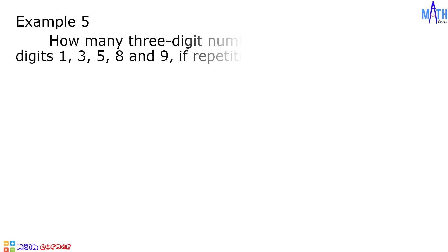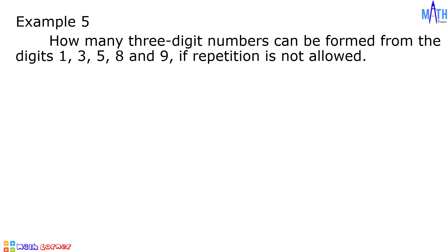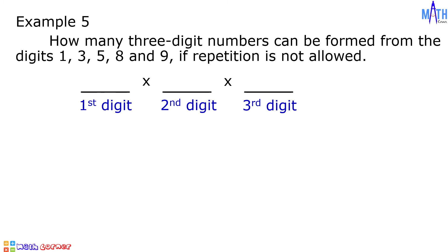Example number five: how many three-digit numbers can be formed from the digits 1, 3, 5, 8, and 9 if repetition is not allowed? We will form three-digit numbers. There are five options: 1, 3, 5, 8, and 9. Since repetition is not allowed, there are five options for the first digit, only four options for the second digit, and three options for the third digit. Five times four times three is equal to 60. There are 60 three-digit numbers that can be formed.